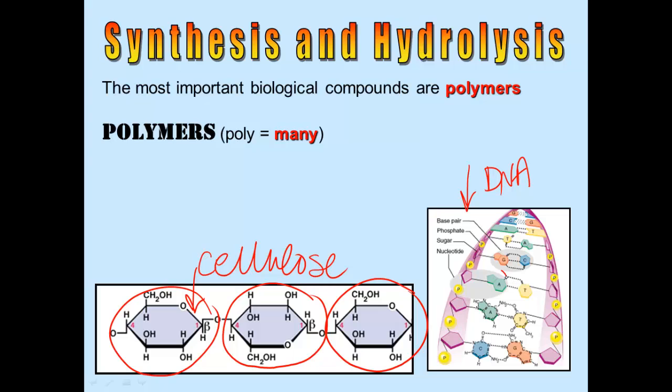You can see here the letters of the DNA: A, G, T, A, C, G, et cetera. Those nucleotides are joined together to make the polymer of DNA.